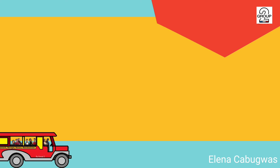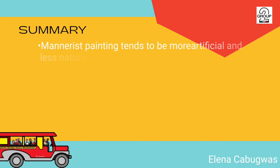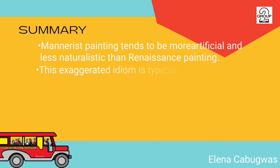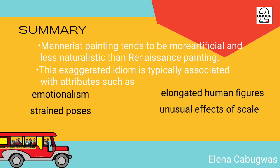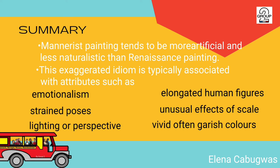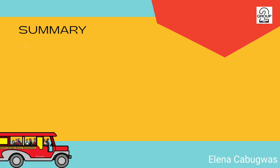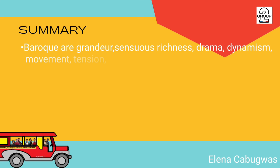Hi, I'm Elena, and I will summarize all the topics. Mannerist painting tends to be more artificial and less naturalistic than Renaissance painting. This exaggerated idiom is typically associated with attributes such as emotionalism, elongated human figures, strained poses, unusual use of scale, distorted lighting or perspective, and vivid, often garish colors. Second, the Baroque is characterized by grandeur, sensuous richness, drama, dynamism, movement, tension, emotional exuberance, and a tendency to blur distinctions between the various arts.